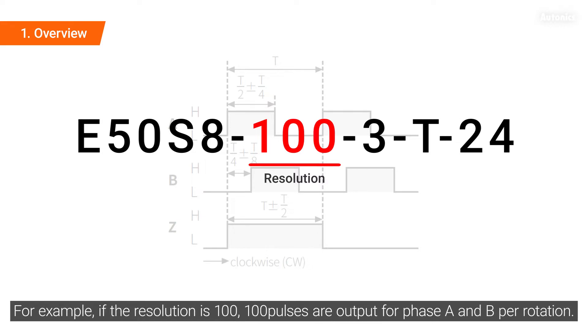For example, if the resolution is 100, 100 pulses are output for phase A and B per rotation.